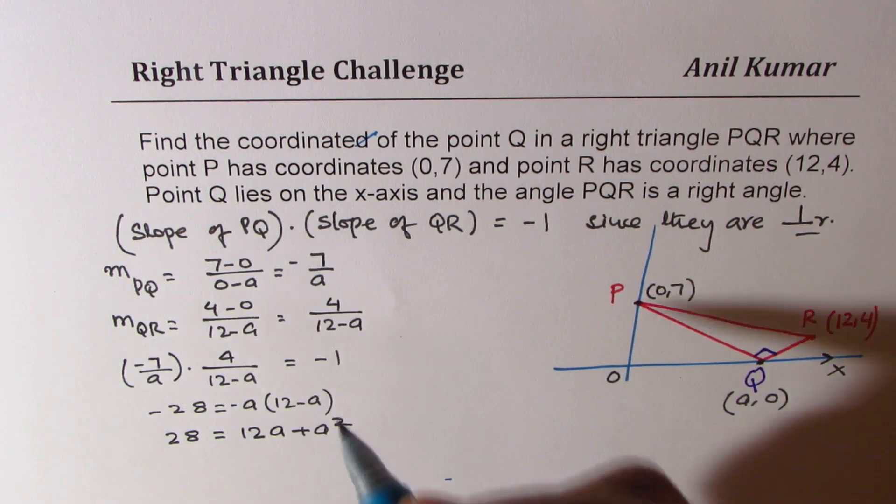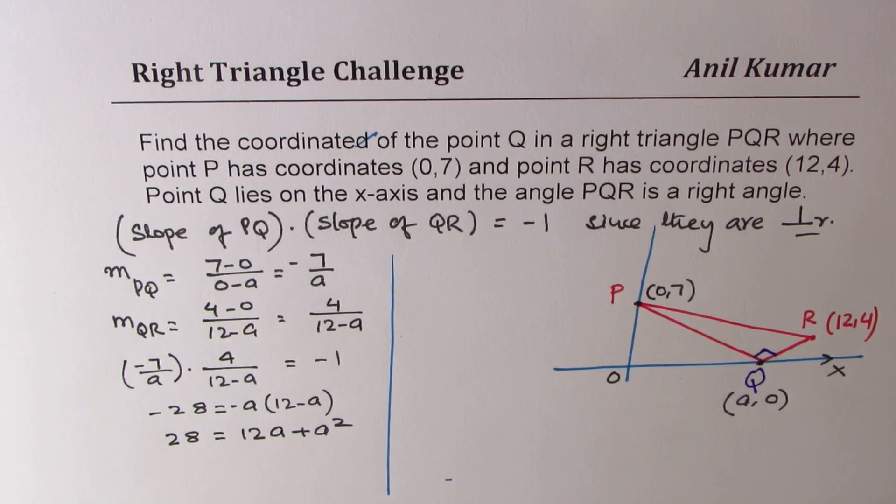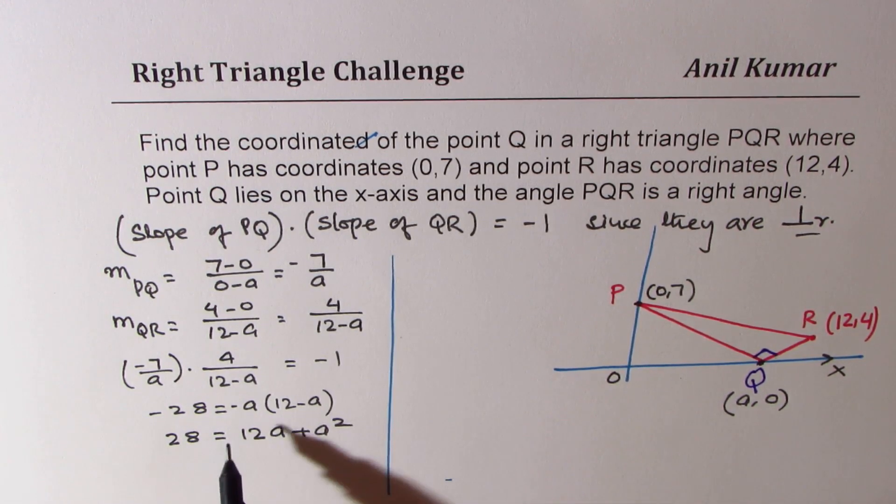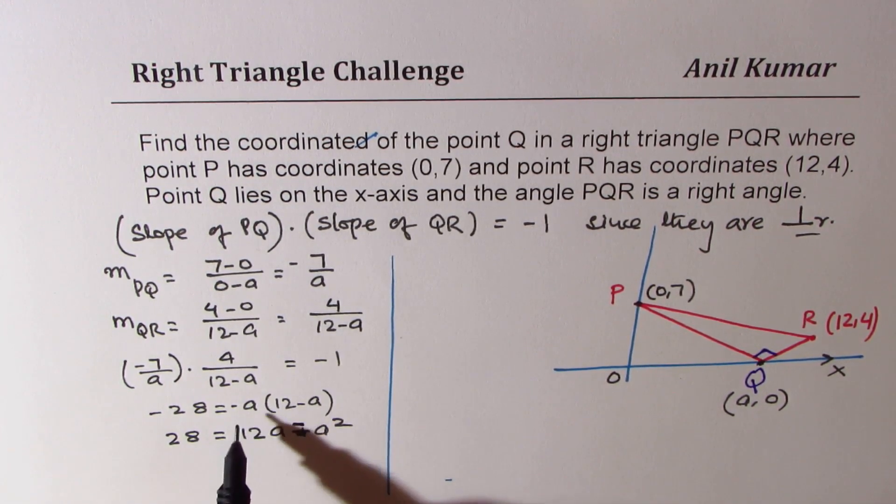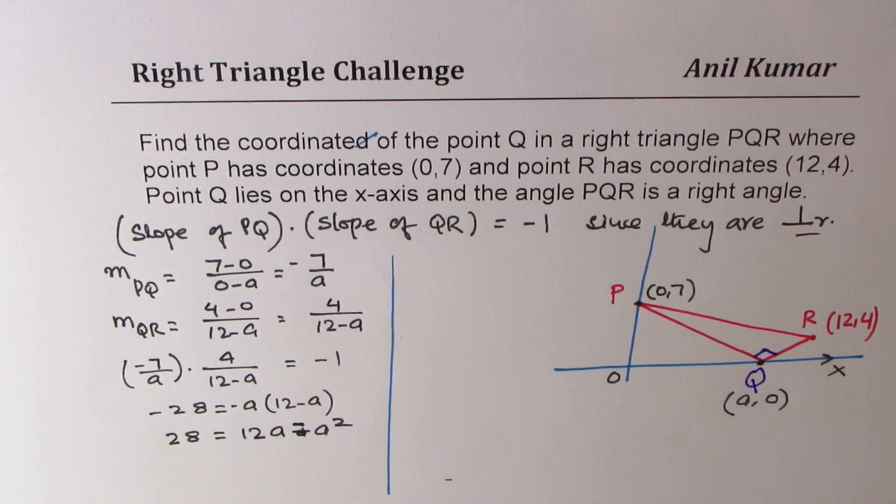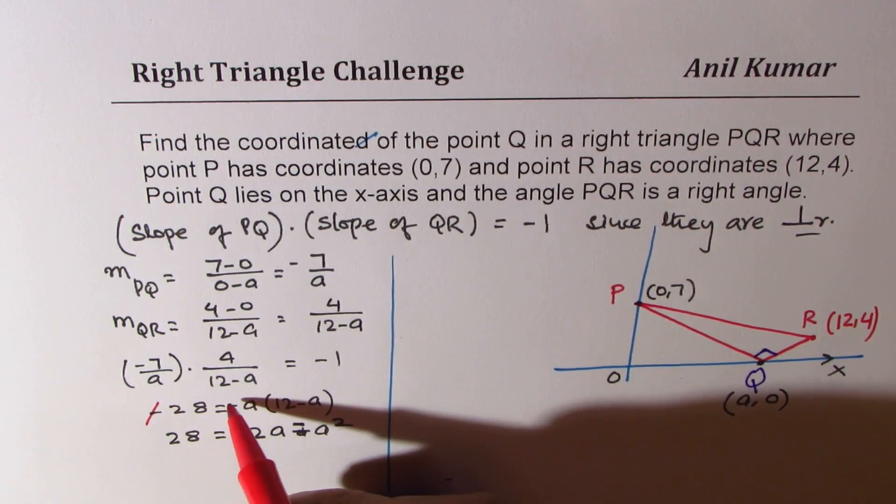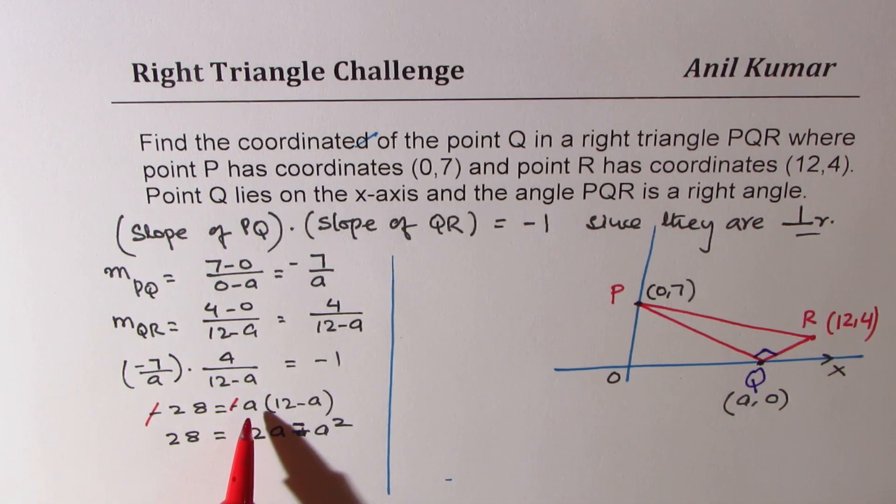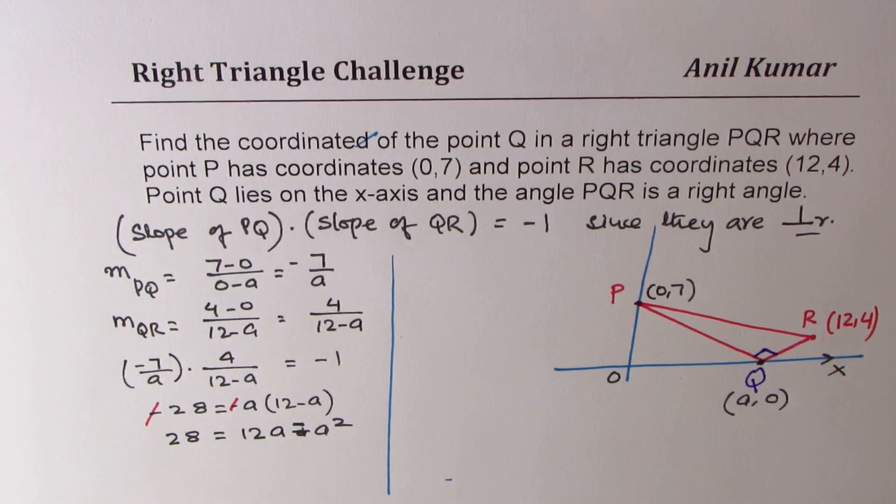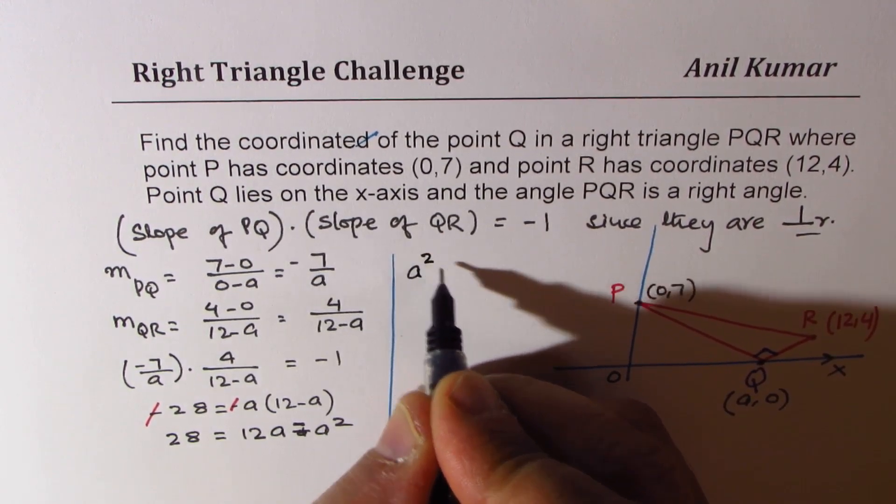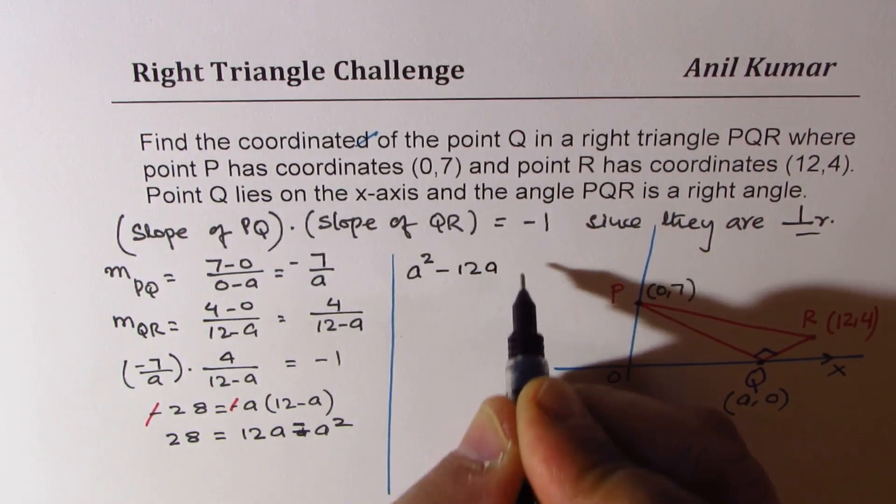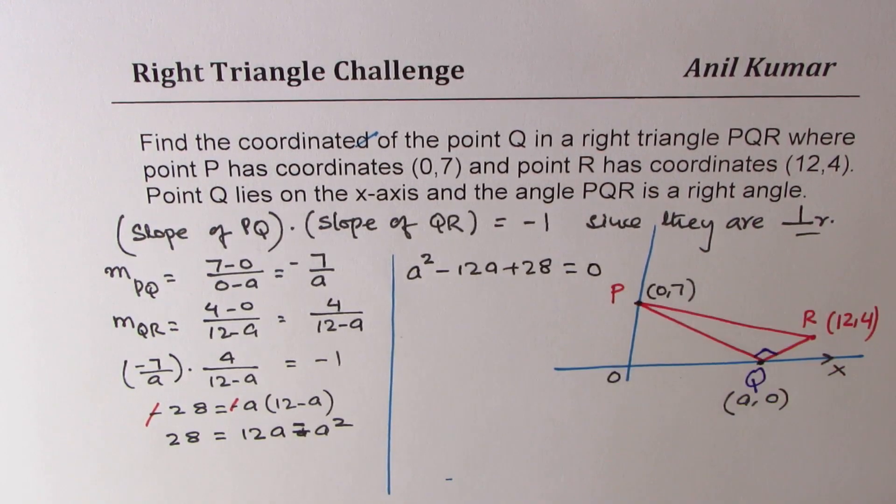Let's take it to the right side to solve it further. This should be minus a square. I'm sorry. So when you multiply, we cancel this first. So we'll first cancel these negative signs. So when you multiply it with a, you get 12a minus a square. So let's solve this equation. Bringing all to the left side, we get a square minus 12a plus 28 equals to 0.